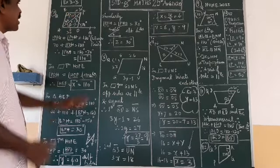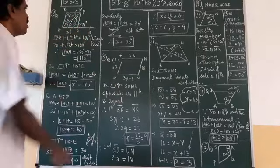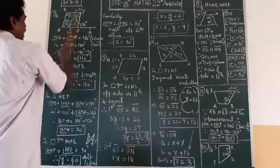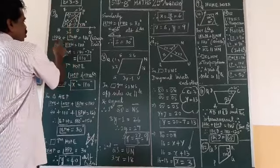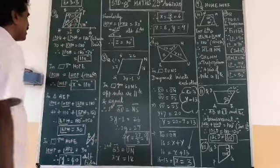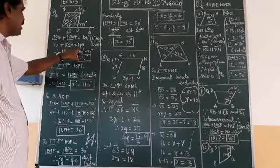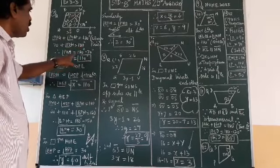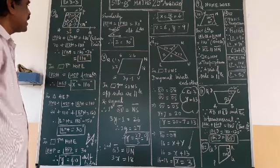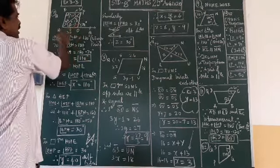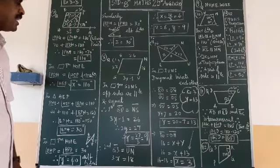First step I am telling, 70 degree this POQ is given, so it is forming a linear pair. So I can find HOP angle. So I am taking POQ plus POH equal to 180 degree. So 70 plus POH equal to 180 degree, therefore POH equal to 180 minus 70, 110 degree.